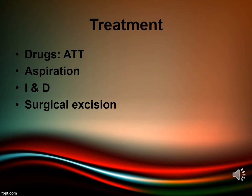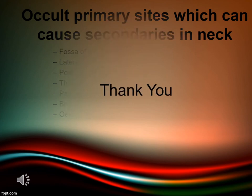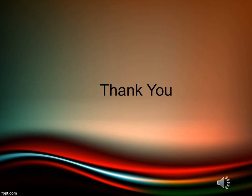Occult primary sites which can cause secondaries in neck lymph nodes include the fossa of Rosenmüller, lateral wall of the pharynx, posterior third of the tongue, thyroid gland, paranasal sinuses, bronchus, and esophagus. I hope you have enjoyed this lecture on lymphadenopathy — please watch this video again and share it.